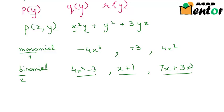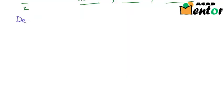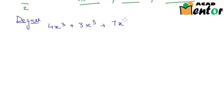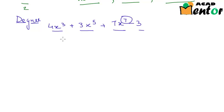Now we will look at what the degree of a polynomial means. The degree of a polynomial is the highest power of the variable present in the polynomial. For example, in 4x cubed plus 3x to the power 5 plus 7x to the power 7 minus 3, the powers are 3, 5, 7, and 0 respectively. The highest power is 7, so the degree of this polynomial is 7.